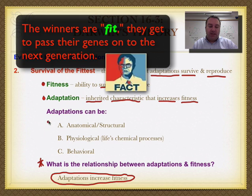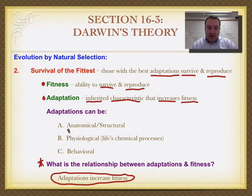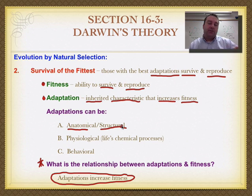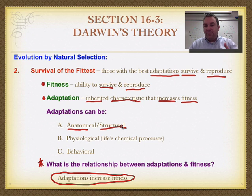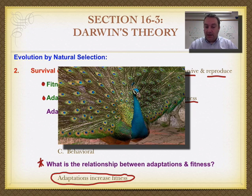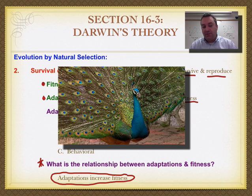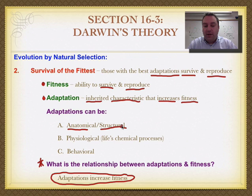Adaptations can be put into three categories. Number one, they can be anatomical or structural. For example, stronger muscles might make you faster so you can escape predators or catch prey more effectively. Better eyesight allows you to see prey and catch more food. Think of peacocks — if you have bigger and brighter feathers, that allows you to attract more mates, which increases your fitness. That would be an anatomical or structural adaptation.